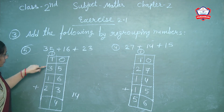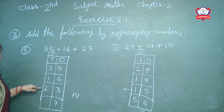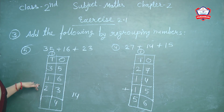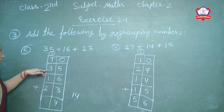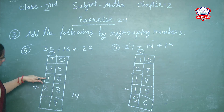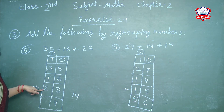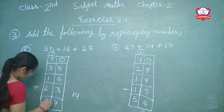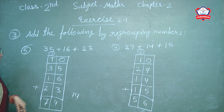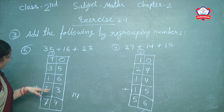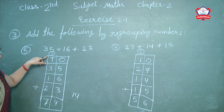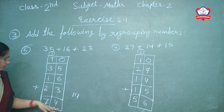Now tens column: 1 carry plus 3 plus 1 plus 2. First 1 plus 3 is 4, then 4 plus 1 is 5, then 5 plus 2 is 7. So write 7. The answer is 35 plus 16 plus 23 with 1 carry is equal to 74.